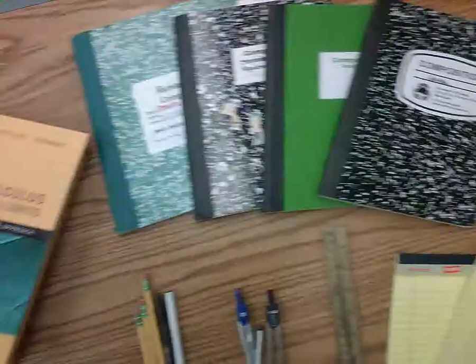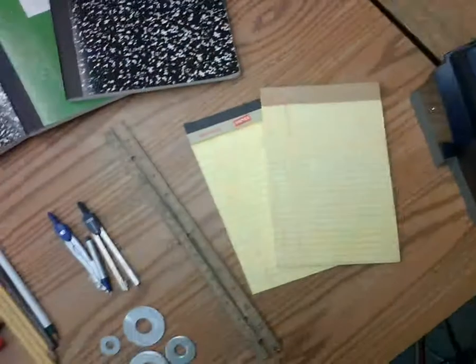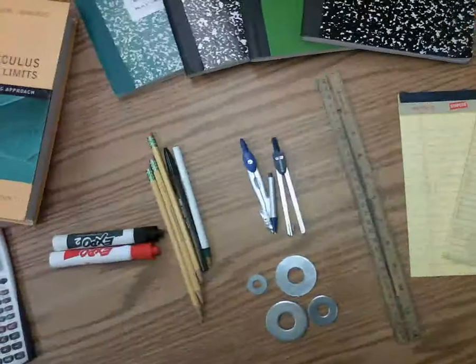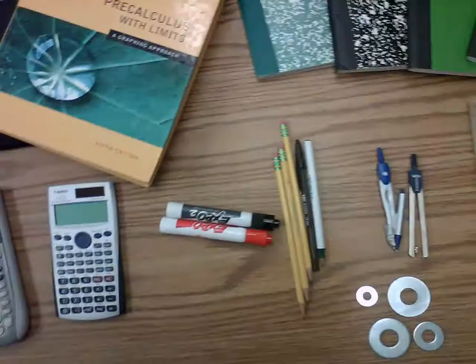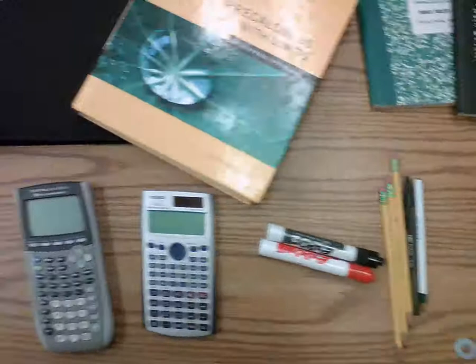Again, a binder. We need a textbook. Composition notebooks. We need legal pads, ruler, compass, and some washers, pens, pencils. We need some dry erase markers, calculator, and some index cards. All right? Make sure you get all those. Thanks a lot.